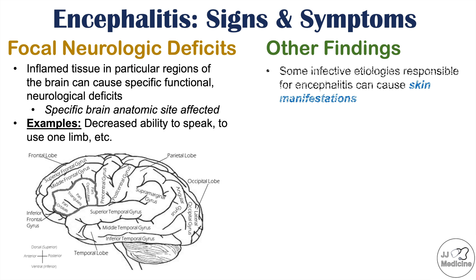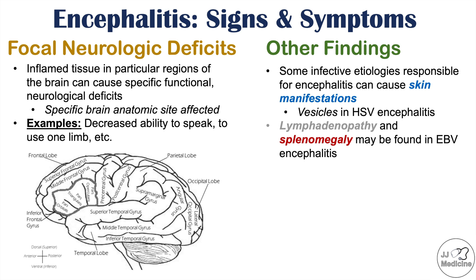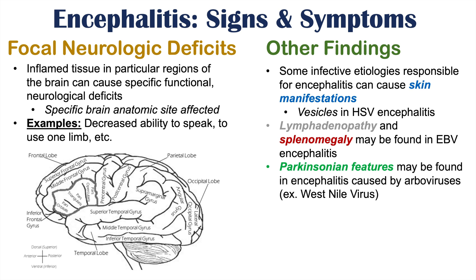Other findings can occur depending on the infective etiology. Some infective causes can manifest on the skin — for example, vesicles in HSV encephalitis from reactivation and retrograde transmission to the brain. Lymphadenopathy, enlarged spleen or splenomegaly may be found in Epstein-Barr virus encephalitis. Parkinsonian features such as tremors and restlessness may be found in encephalitis caused by arboviruses like West Nile virus.